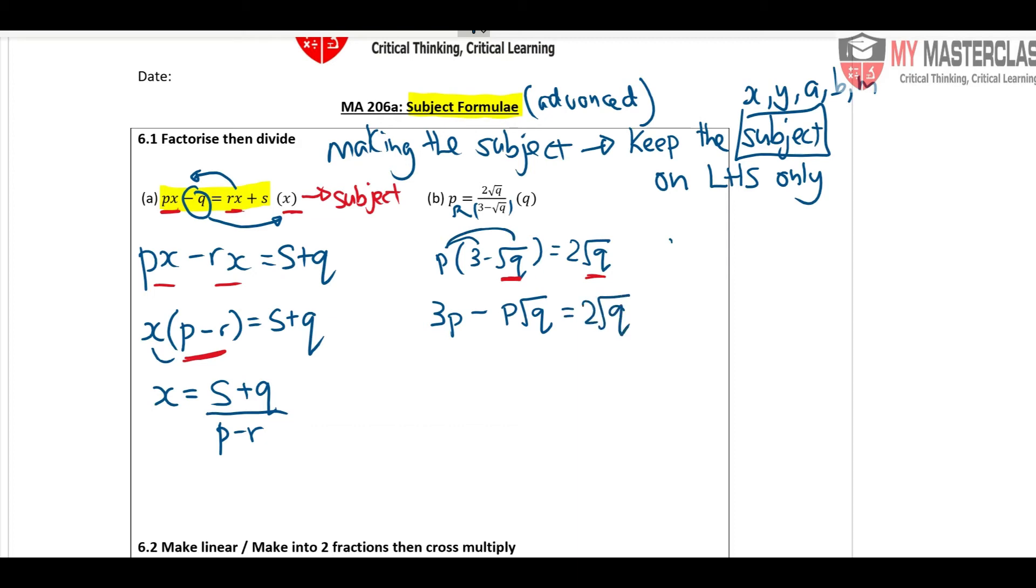So instead of bringing the Q to the left side, we can bring the Q to the right side instead, because there's one Q here and there's one Q here. All right, so we bring it to the right side: 2 square root Q plus P square root Q.